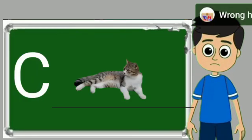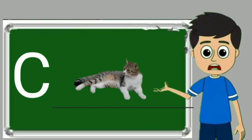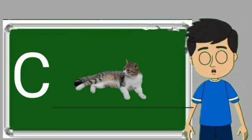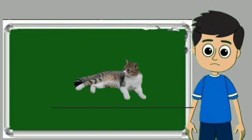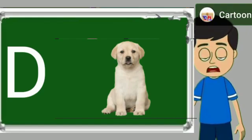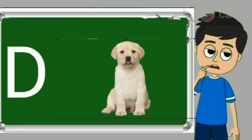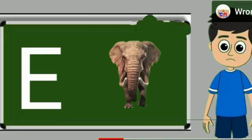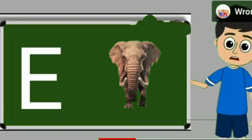C for cat. Cat means billy. D for dog. Dog means kutta.